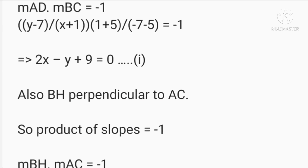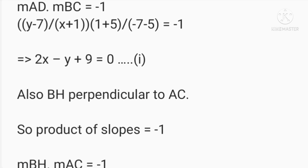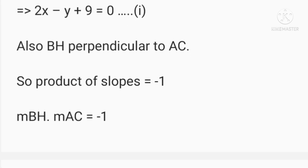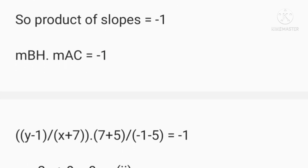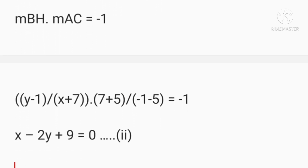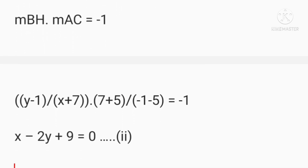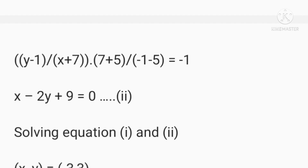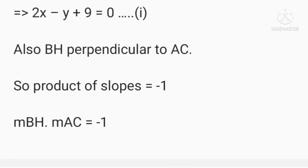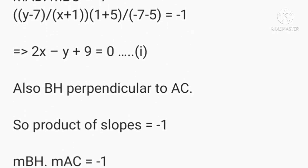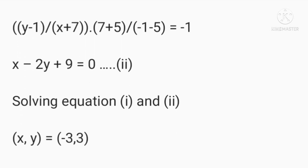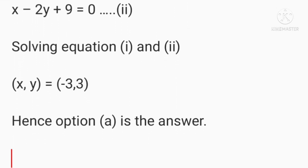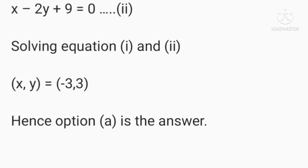Similarly, BH is perpendicular to AC, so the product of slopes equals -1, giving the equation x - 2y + 9 = 0. Solving these two equations simultaneously, we get x = -3 and y = 3. Hence the orthocenter is (-3, 3) and option A is the answer.